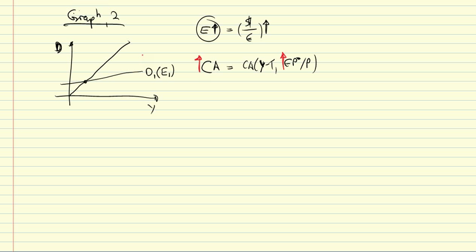What does it imply in the diagram? Well, it implies this upward shift. We can label this D2, E2, and we're moving from 1, the first equilibrium, to the second equilibrium, Y2. So, E2 is larger than E1. Let's note that here as well.